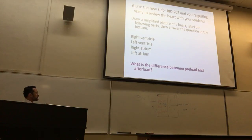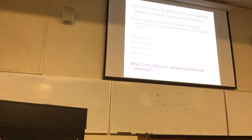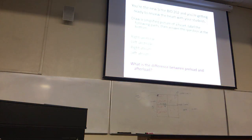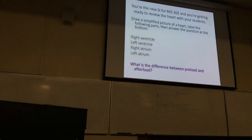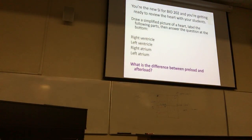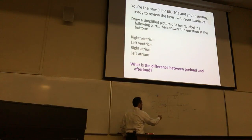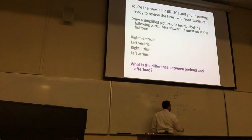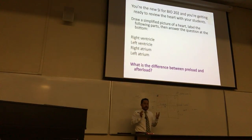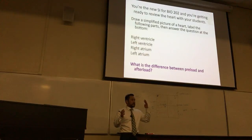Does anybody know the answer? Afterload is the amount of force it takes to expel blood from the left ventricle. Almost exactly correct. Afterload is the pressure the heart is working against to open up the aortic valve. There's a valve right here — this is the aortic valve — and in order for flow to take place, P1 has to be greater than P2.